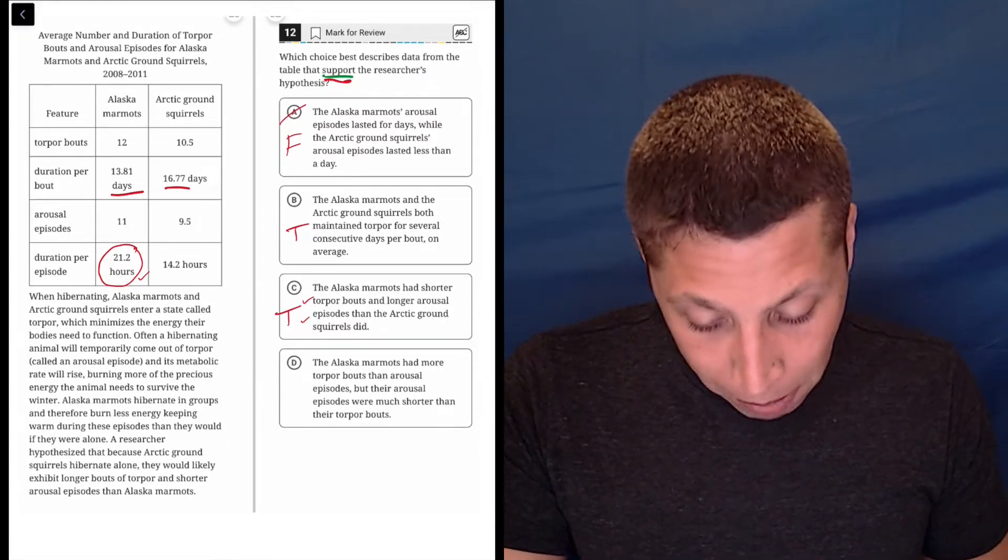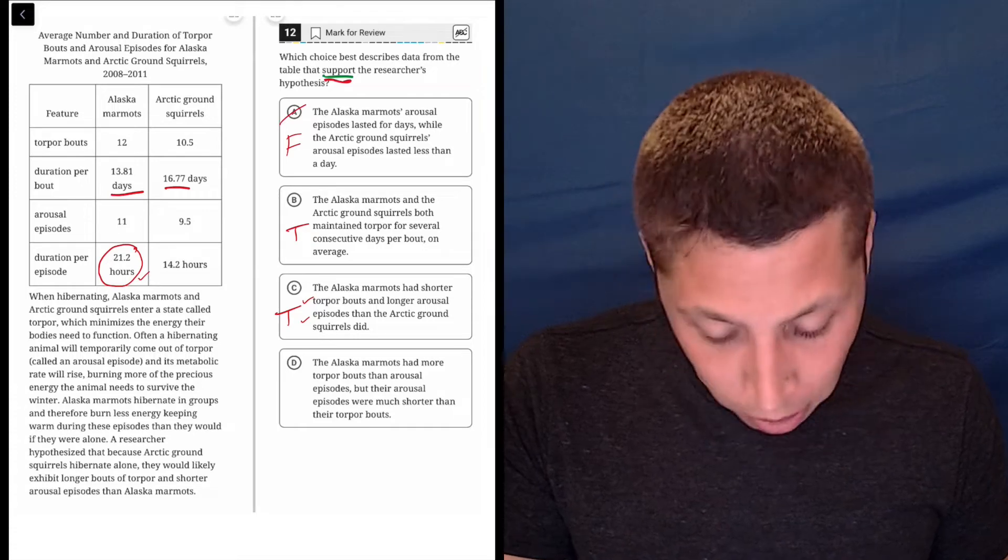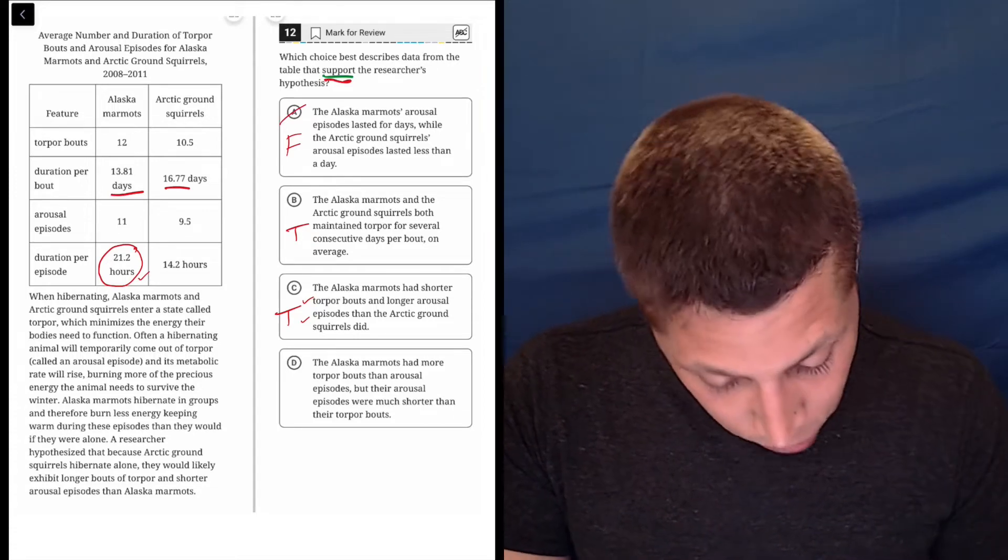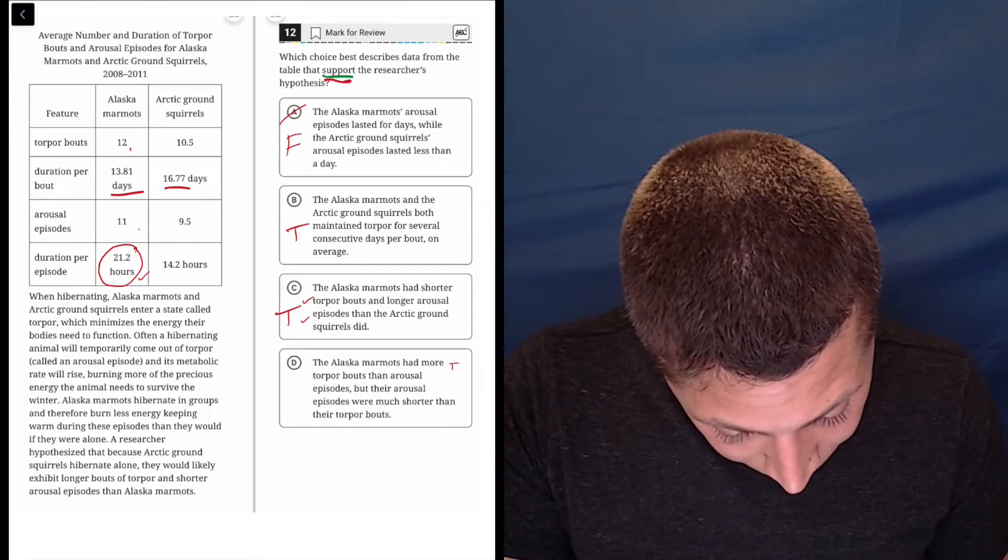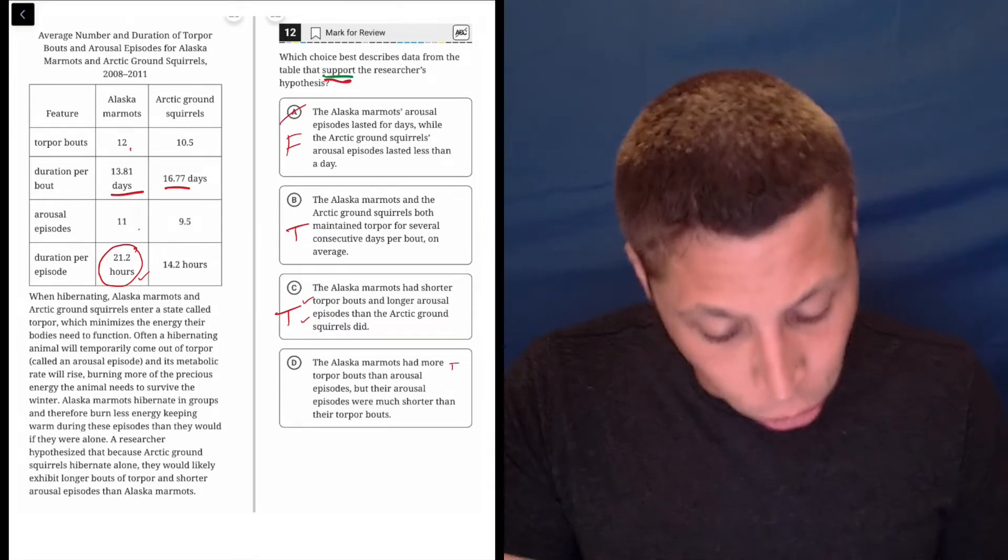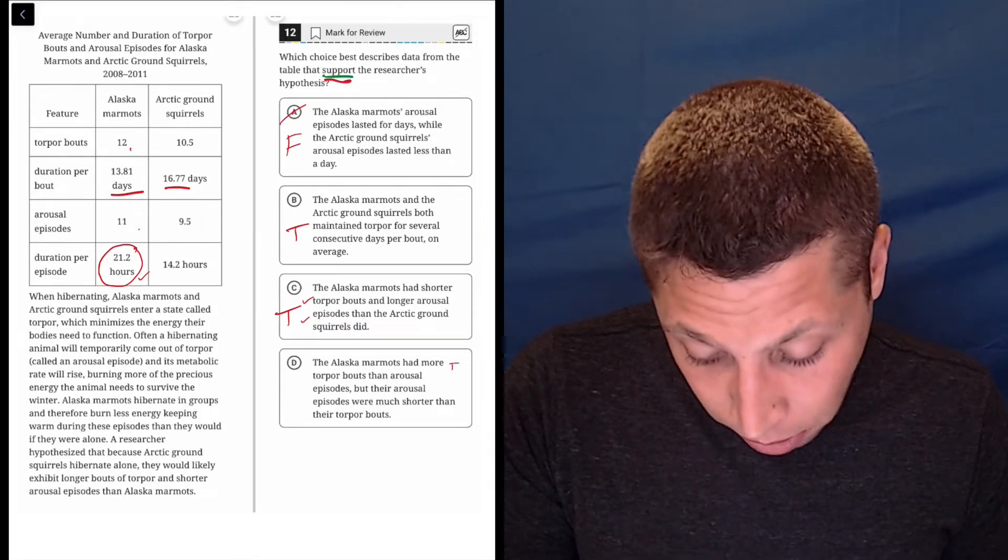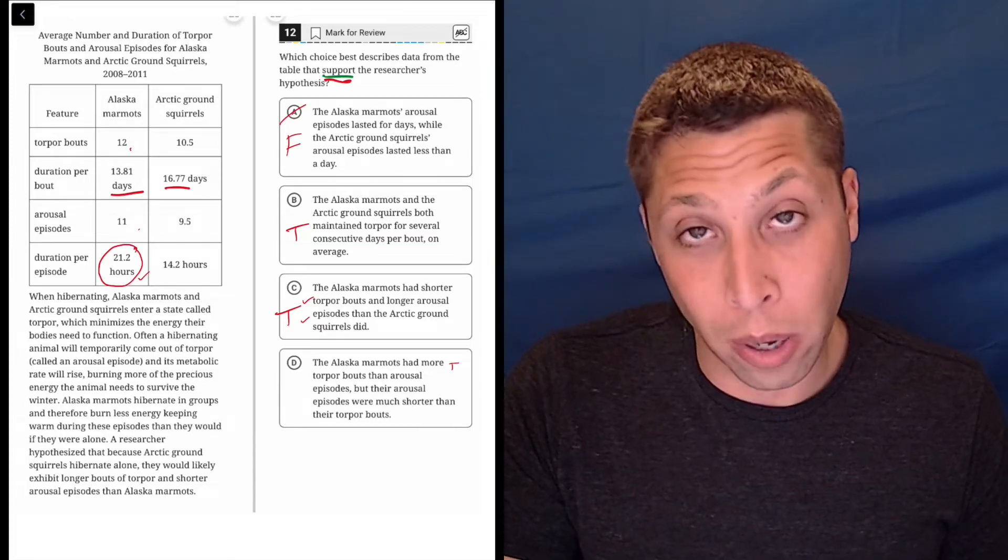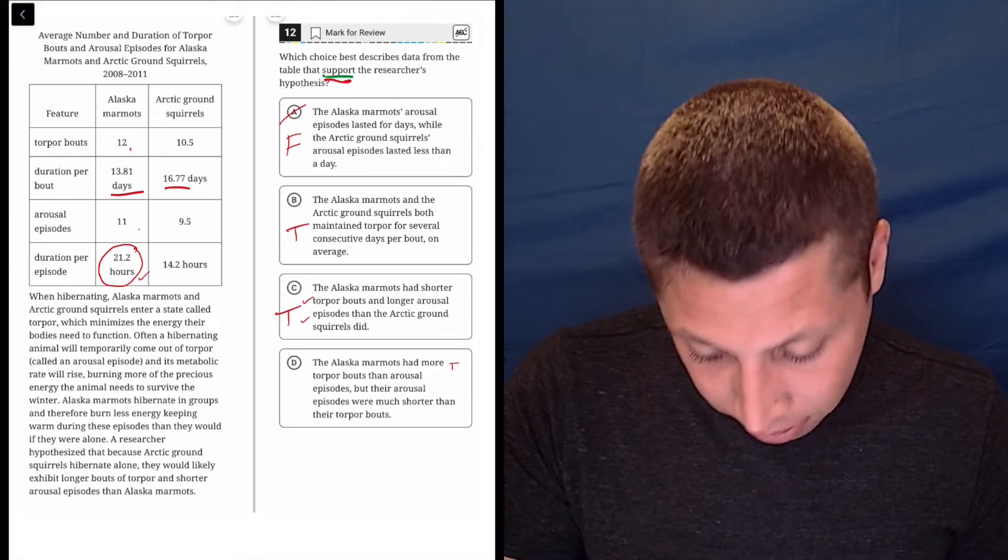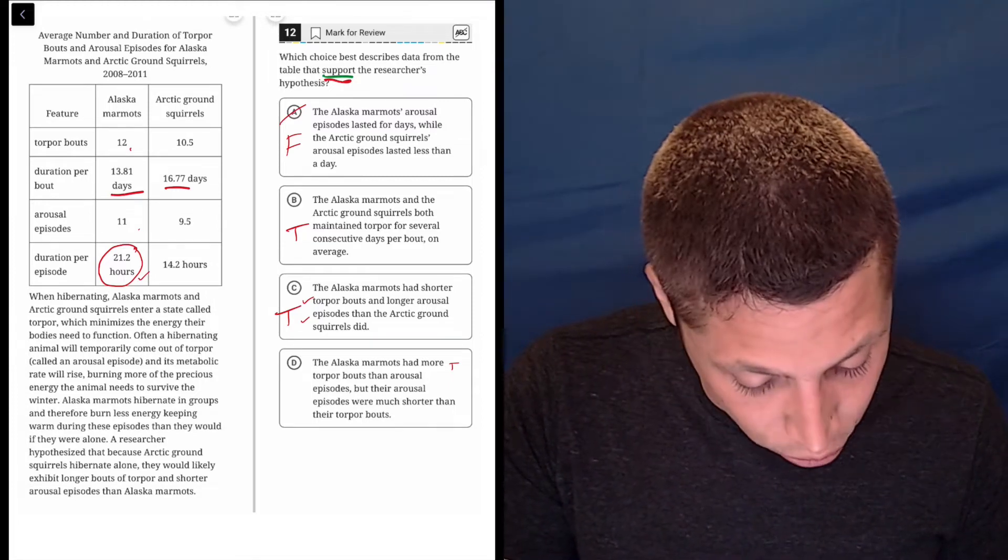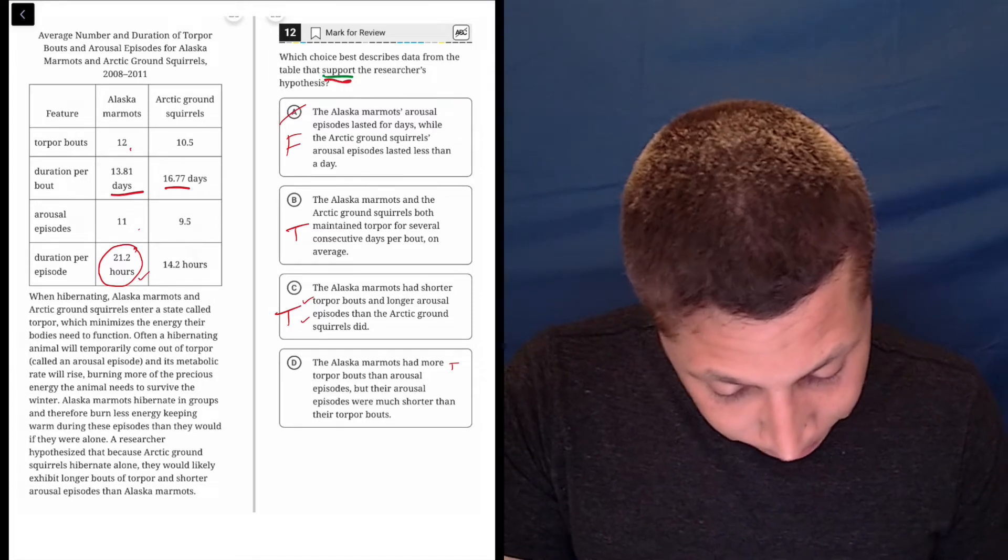The Alaska marmots had more torpor bouts. That's true, 12.2 to 10.5. Oh, 12 then arousal episodes, so 12 to 11, that's true. But their arousal episodes were much shorter than their torpor bouts. Well yes, arousal episodes were 21.2 days or hours, and it's days for the torpor. So arousal definitely shorter.